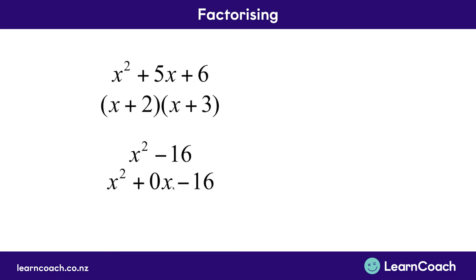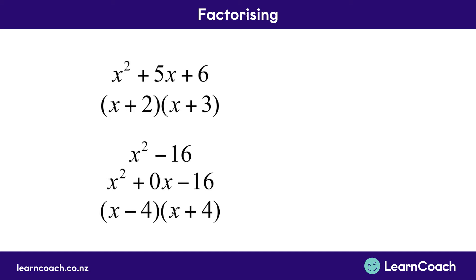This will only work with squared numbers. Negative 4 and positive 4 multiply to make negative 16 and cancel each other out to give 0x. The trick is: if you see a squared x and a squared number like 16, 25, 36, 49, or 64, you can just square root the end number — the 16 gives 4 — and write x minus 4 and x plus 4. Make sure one is a minus and one is a plus so they cancel to make 0.